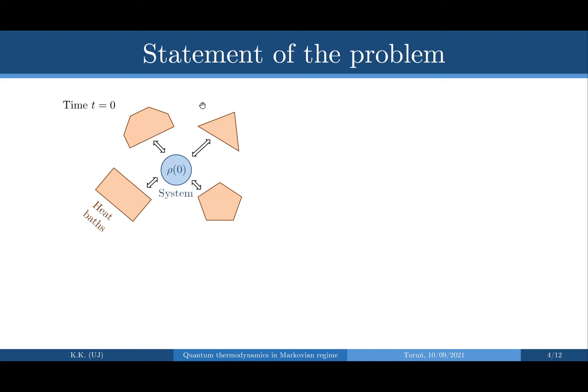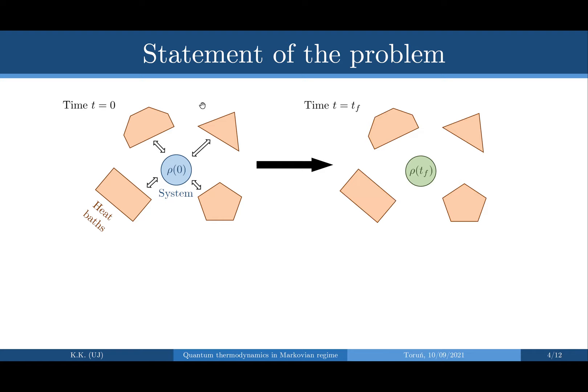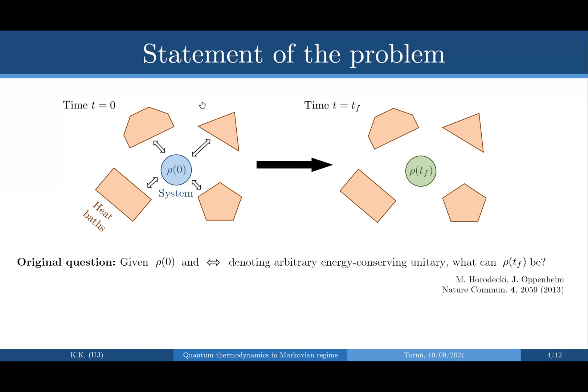Let me be a little more specific. We consider a finite-dimensional quantum system, initially in state ρ₀ at time zero, interacting with arbitrary thermal heat baths — systems described by arbitrary Hamiltonians but prepared in a thermal Gibbs state. We want to ask: what can the state of the system be at some later time t_f? This question was originally asked by Horodecki and Oppenheim in 2013, and they considered interactions between the system and the baths to be given by arbitrary energy-conserving unitaries. When you allow for arbitrary unitaries, the system can get arbitrarily correlated with the baths, and those correlations can later affect the dynamics — giving rise to strong non-Markovian effects.